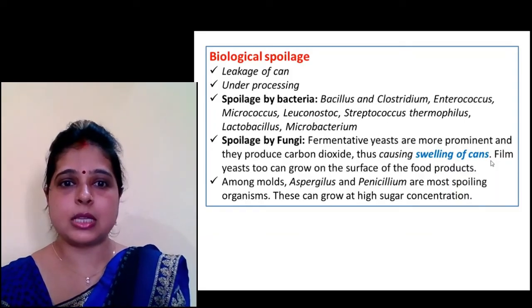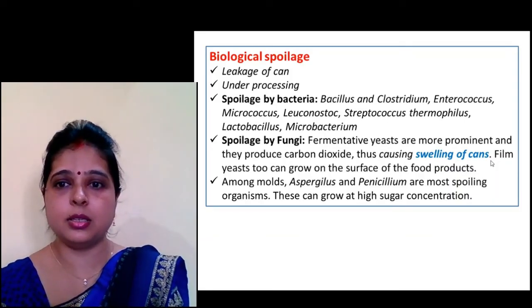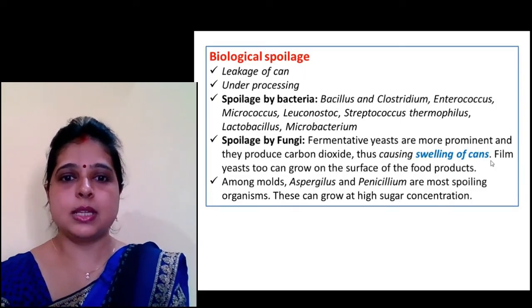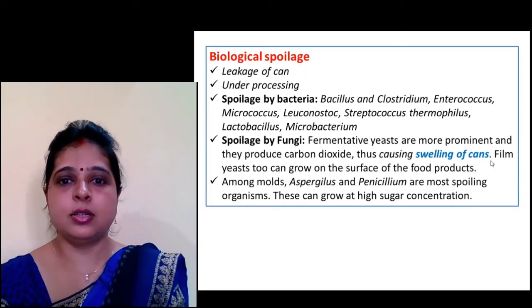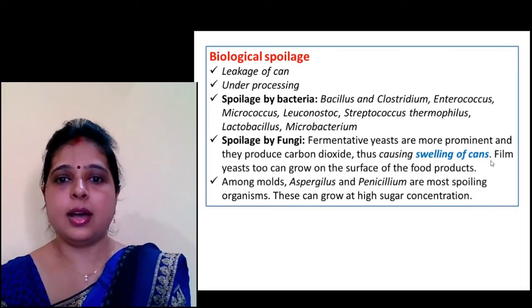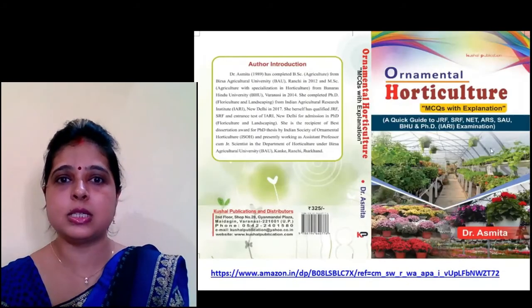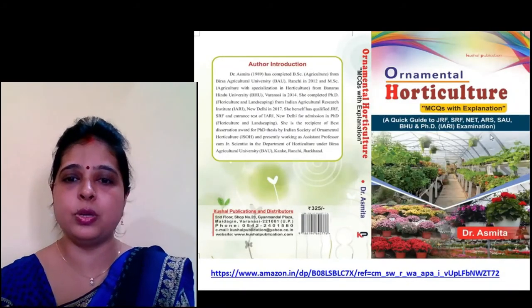Among molds, Aspergillus and Penicillium are the most spoiling organisms in canned foods, and they can also grow at high sugar concentrations. These cover all the major aspects of food spoilage.